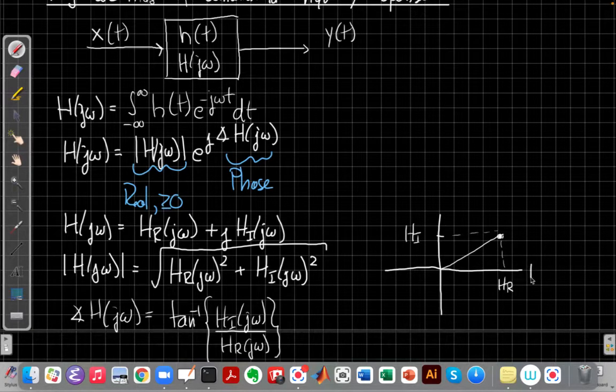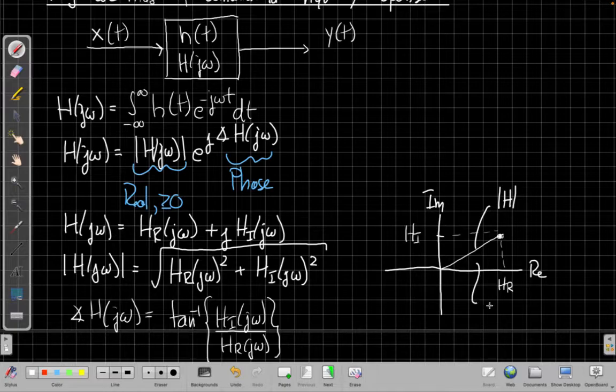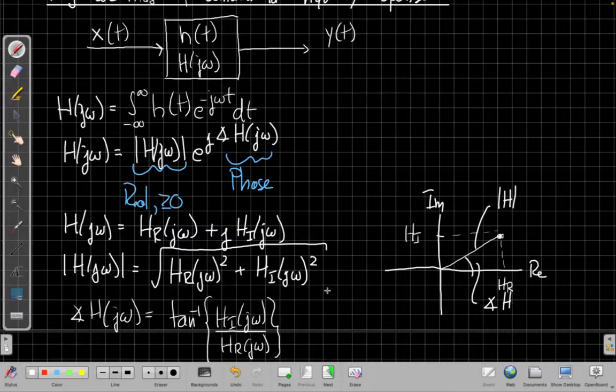So here's my real axis, my imaginary axis. The length of this vector here is the magnitude of h. And this angle in here is the phase of h. And then what we're saying by saying h of j omega is that as we vary omega, this point in the complex plane is moving around at different frequencies, so the magnitude may get longer or shorter, and the phase will also change as well.